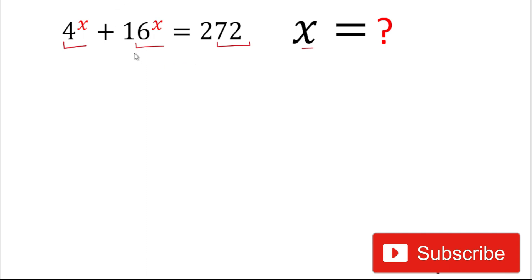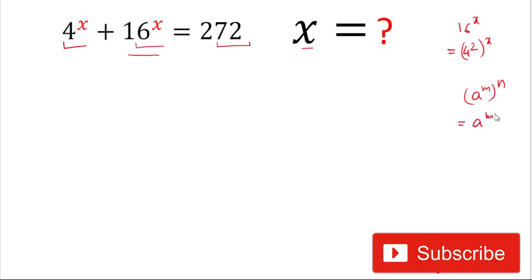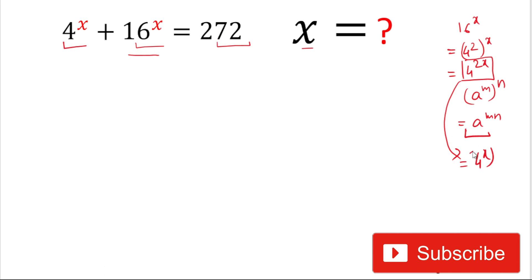For solving this problem we will start with the exponential expression 16 powered by x. Now 16 is the square of 4, so we can write 4 squared and that is powered by x. Using the rule that (a^m)^n equals a^(mn), we can write this as 4 powered by 2x, and 4^(2x) can be written as 4 powered by x, all squared.